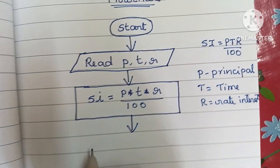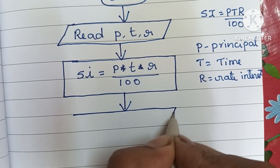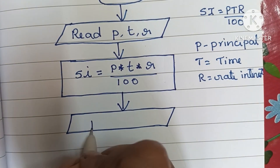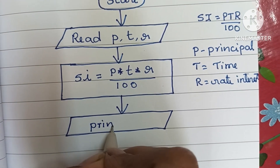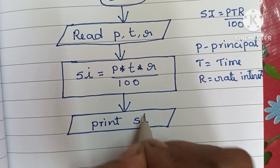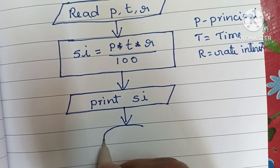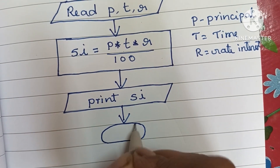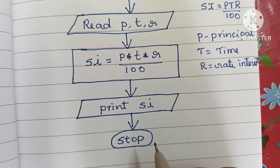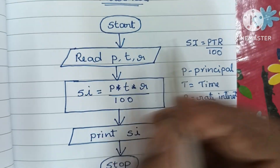Next, we have to write the output. Output is always written within a parallelogram shape. Within that, we print our simple interest — that is, print SI. Finally, we have to stop the flowchart using a stop statement, which is written within an oval shape.